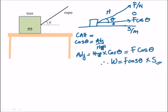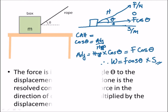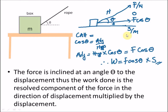This is just a summary: when the force is inclined at an angle theta to the displacement, the work done is the resolved component of the force in the direction of displacement multiplied by the displacement. That's how straightforward it is.